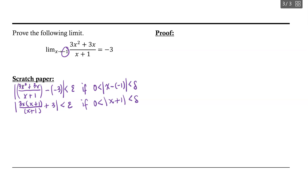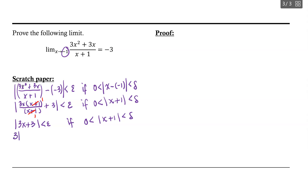I can see that I have factors of x plus 1 in the function that I can cancel out. That gives me the absolute value of 3x plus 3 is less than epsilon, if 0 is less than the absolute value of x plus 1 is less than delta. At this point, I can factor out a 3, giving me 3 times the absolute value of x plus 1 is less than epsilon, if 0 is less than the absolute value of x plus 1 is less than delta.